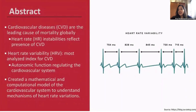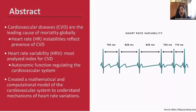Cardiovascular diseases are a leading cause of death worldwide. It is known that some types of instabilities of human heart rate can reflect the presence of cardiovascular diseases. Heart rate variability, or HRV, is one of the most analyzed indices for cardiovascular disease prognosis. To understand the physiological mechanisms of heart rate variations, we created a mathematical and computational model of the cardiovascular system. Our developed model predicts heart rate variability comparable to human heart rate data and can be used to predict abnormal heart rate patterns.